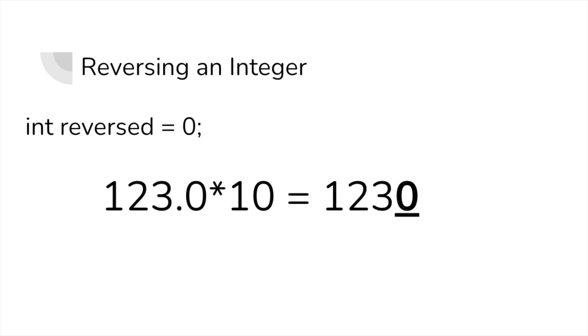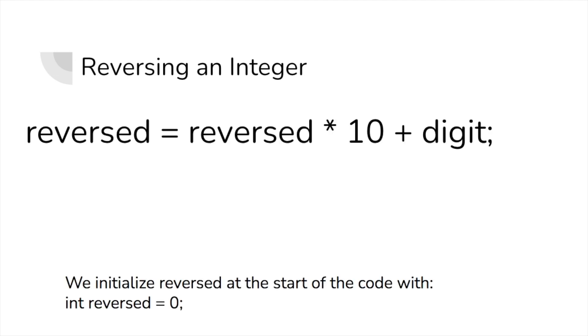To add the digit, we have to multiply reversed by 10. Why? When we multiply a number by 10, we shift the entire number to the left and add an extra zero, which is where our digit goes. So what we do is we set reversed equal to reversed multiplied by 10, and then we add the digit.